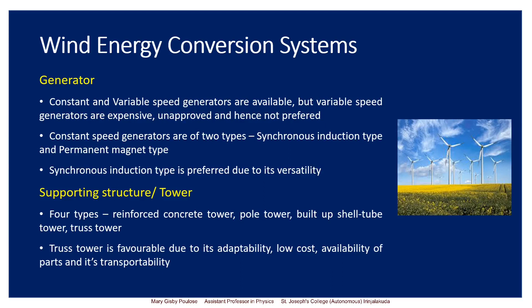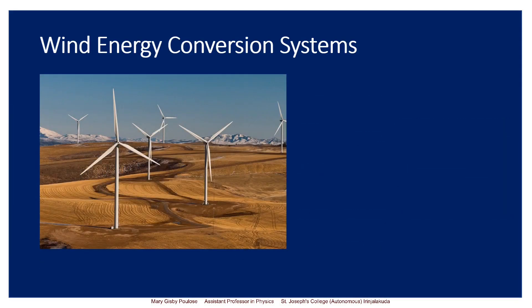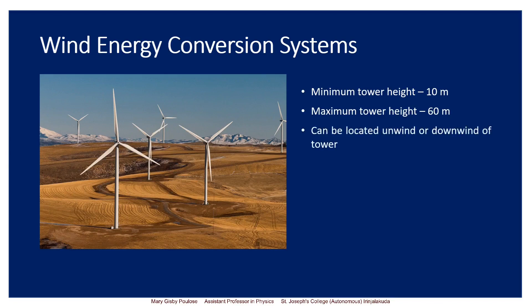So the truss tower design is preferred. It has a height of up to 60 meters. If you are setting up a windmill, it can have a height from 10 to 60 meters. It can be located in two locations: the upwind location or downwind location.